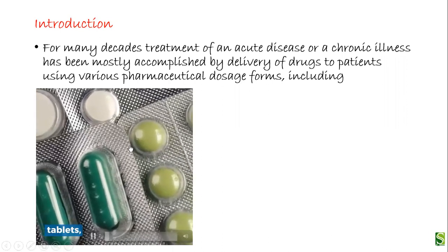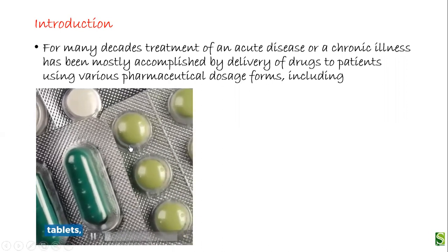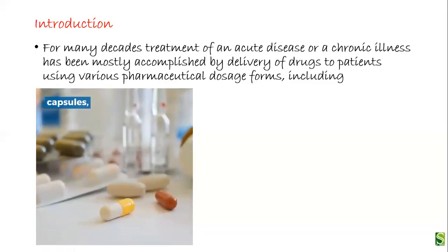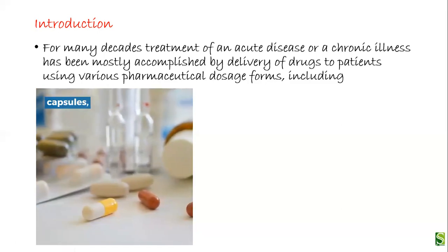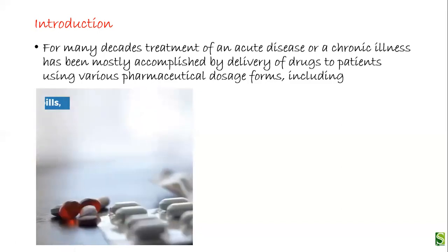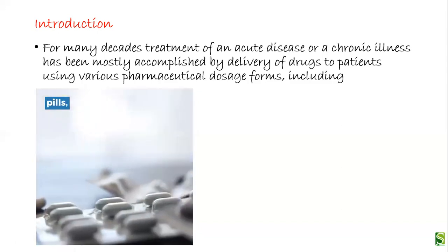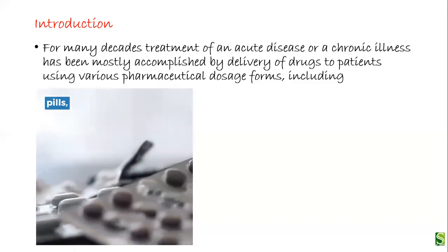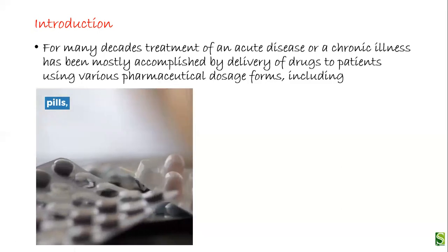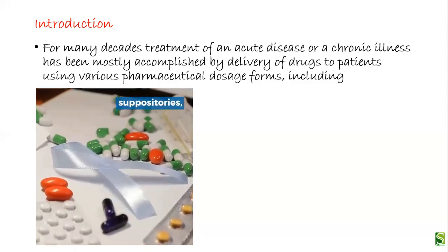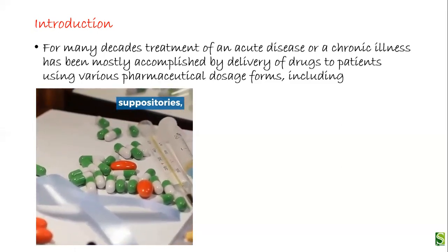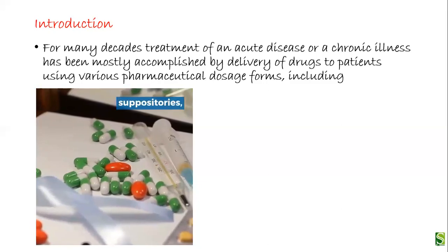Tablets can be of various shapes and sizes and they are the unit dosage forms. Also capsules are conventional dosage forms. Capsules are also of different sizes and we can say capsules too are unit dosage forms. Next comes pills. Conventional dosage forms also include suppositories.